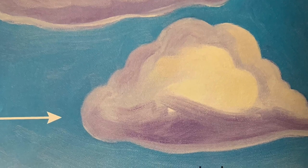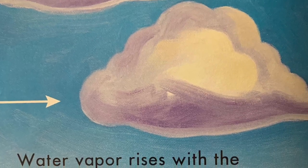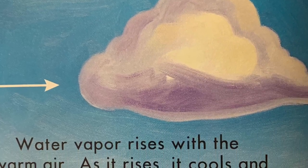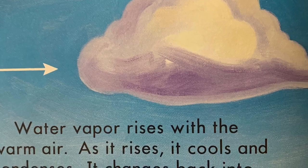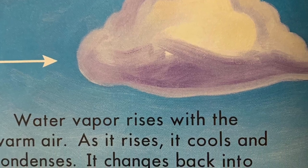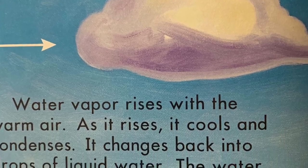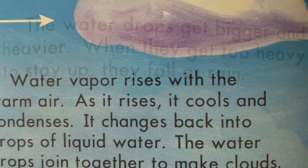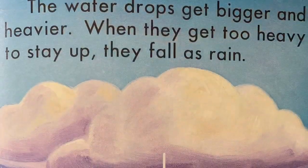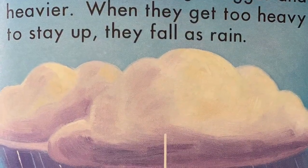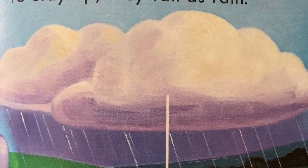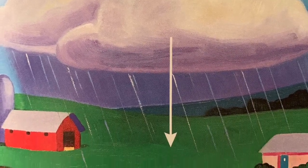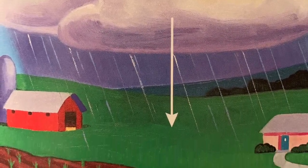As it rises, it cools and condenses. It changes back into drops of liquid water. The water drops join together to make clouds. The water drops get bigger and heavier. When they get too heavy to stay up, they fall as rain.